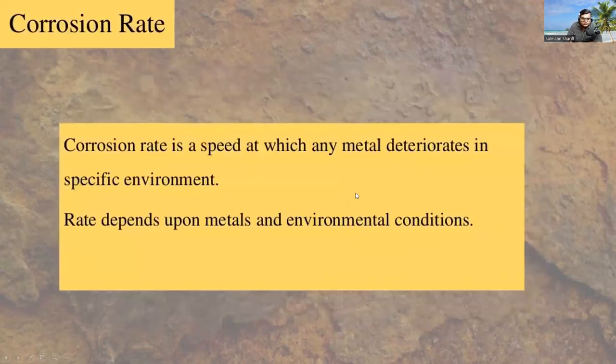Corrosion rate is the speed at which any metal deteriorates in a specific environment. The rate at which the material deteriorates is known as corrosion rate. It depends upon metals and specific atmospheric conditions.